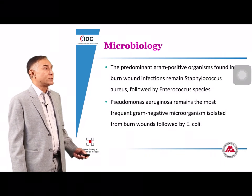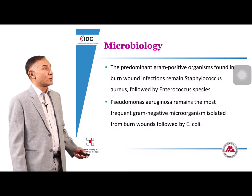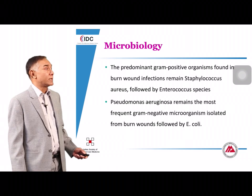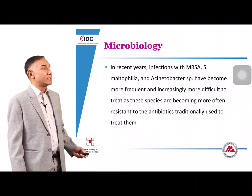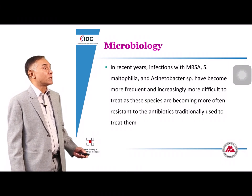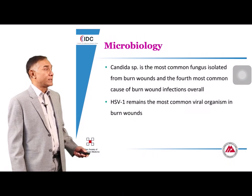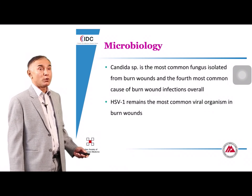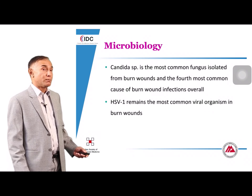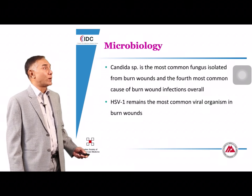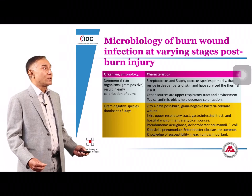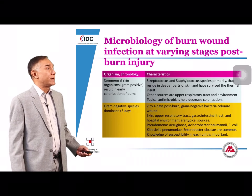The microbiology of burn wound infections typically shows gram-positive organisms early on — Staphylococcus aureus and Enterococcus species. Later, gram-negatives take over, classically Pseudomonas aeruginosa followed by Enterobacteriaceae. In recent years there has been increased incidence of MRSA, Stenotrophomonas, and Acinetobacter, directly related to antibiotic exposure. Candida takes over with prolonged antibiotic use and hospital stay. The important virus in the burn setting is Herpes simplex, usually type 1.